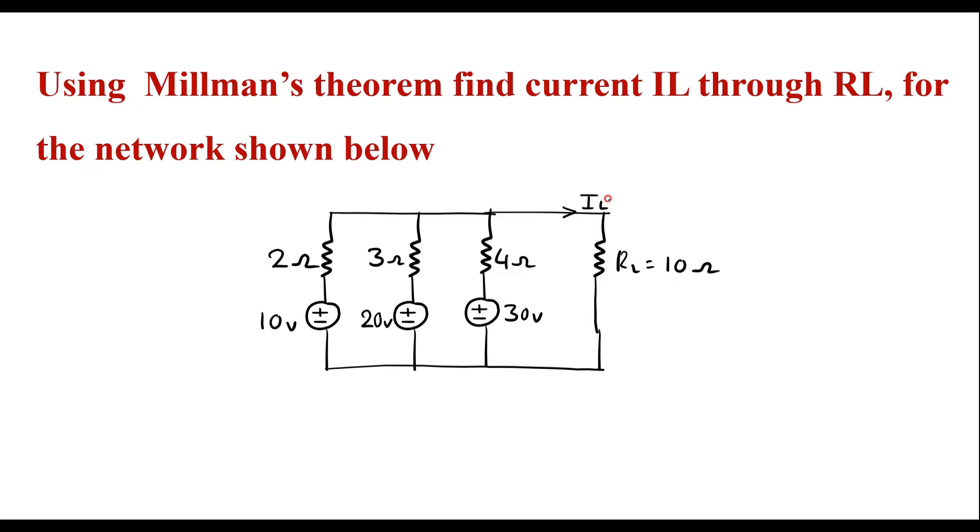This is the given circuit. We have to find current IL which flows through the load resistance RL, that is 10 ohm resistor, using Millman's theorem.